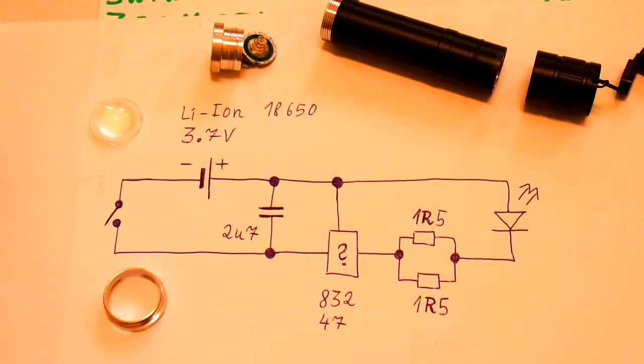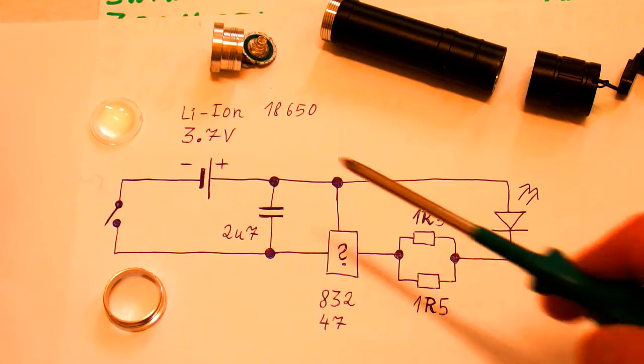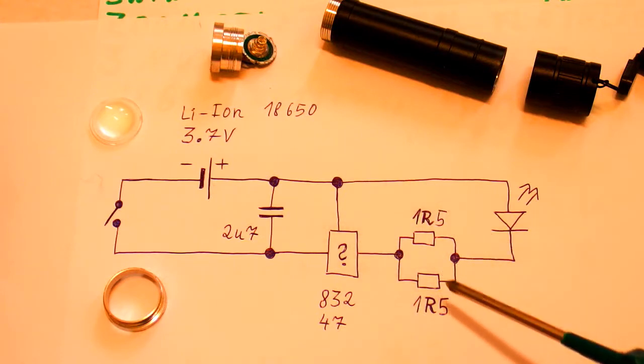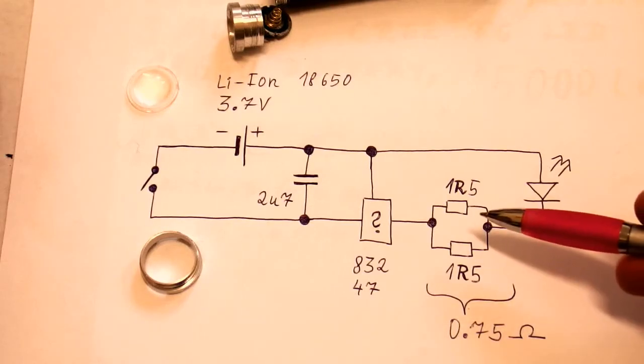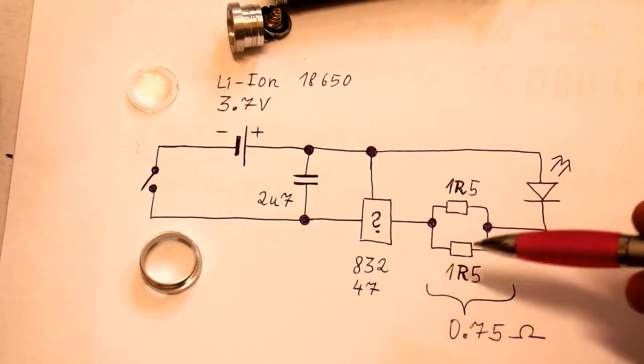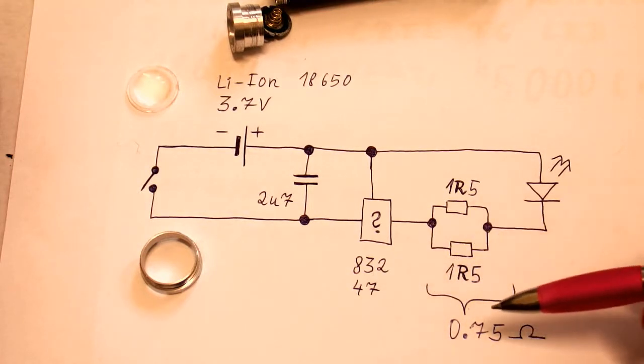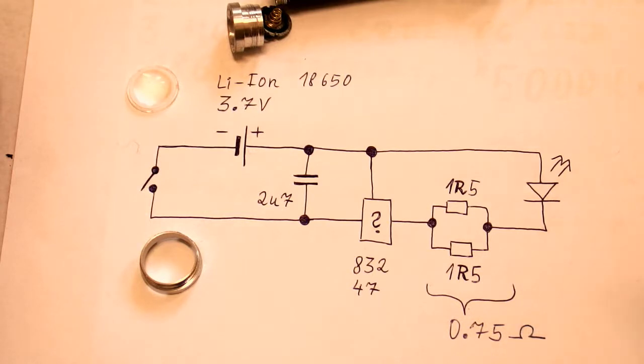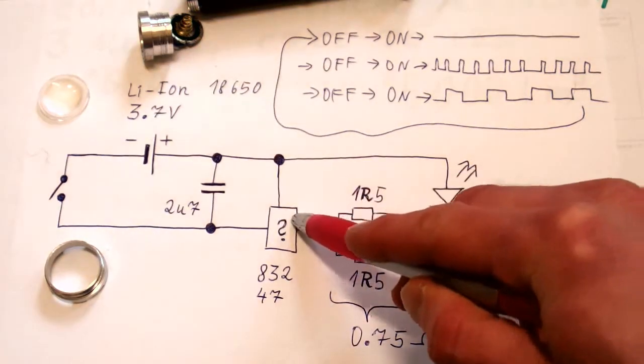So let's try to reverse engineer the schematic of it. And it's neither a switching buck regulator nor a linear constant current regulator. It's just a circuit with a series resistor. So the current is only controlled by those two resistors in parallel, which actually works as one single resistor with 0.75 ohm resistance.